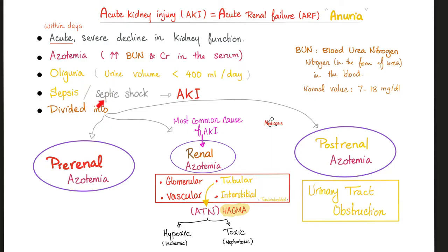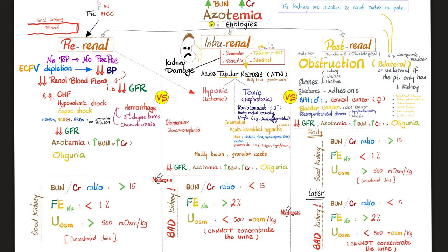All that metabolic gunk piles up in the blood. Sepsis or septic shock is a common cause; hypovolemic shock is another. Pre-renal: blame the renal artery for not bringing enough blood. Post-renal: blame the outflow tracts. Intrarenal: blame the glomerulus, tubule, interstitium, or renal vessels. Acute renal failure means azotemia, high BUN and creatinine, high anion gap metabolic acidosis. Don't forget the mnemonic: no BP, no PP — if blood pressure is low, you perfuse the kidney less and produce less urine.